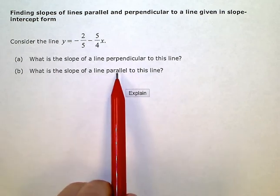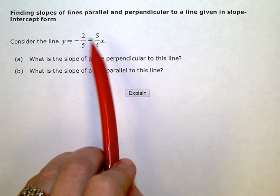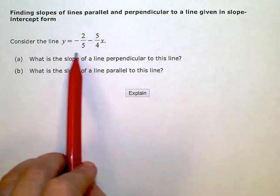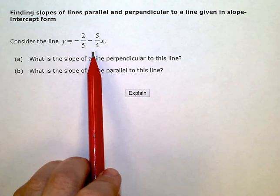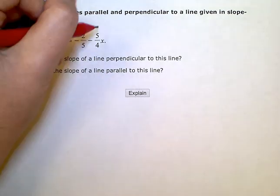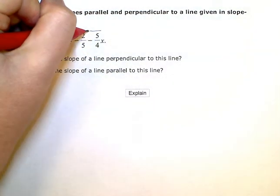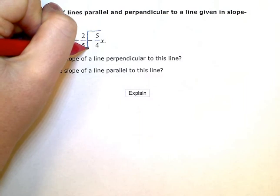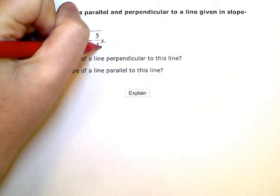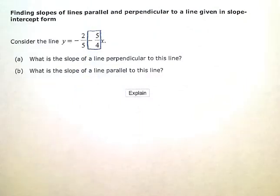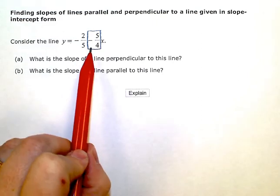So this question is all about slope. Looking at this equation, I need to pick out the slope. The slope is always the one that is directly attached or the coefficient to the variable. So my slope here is negative 5 fourths.